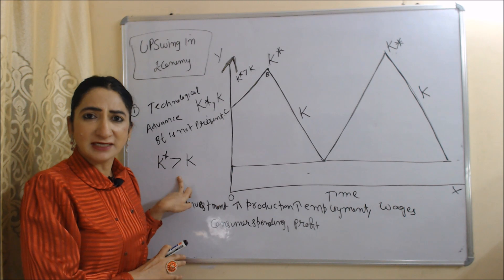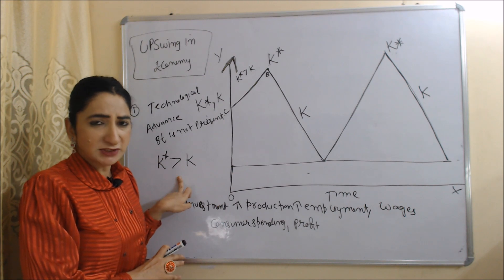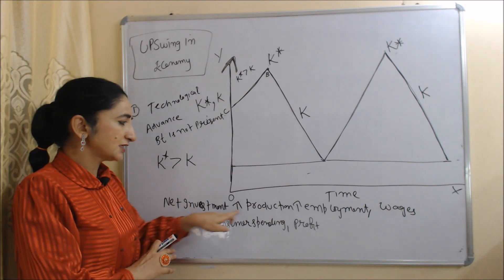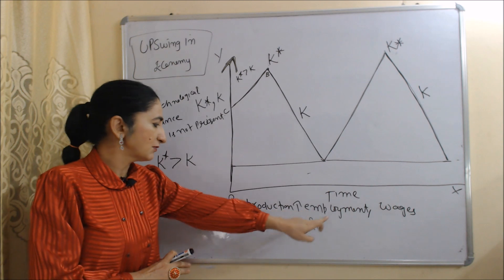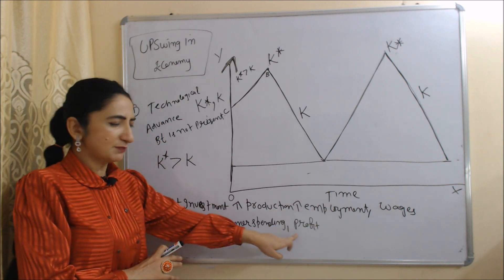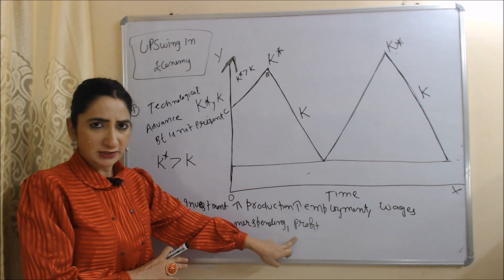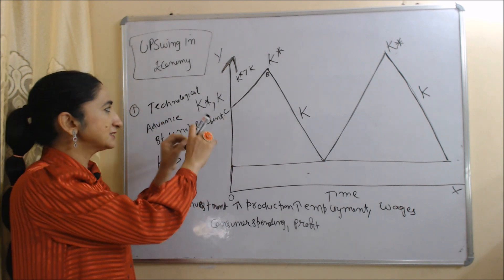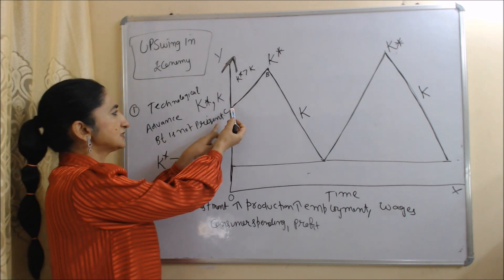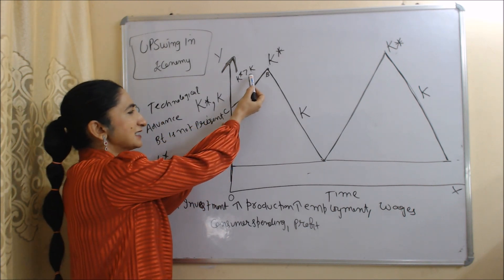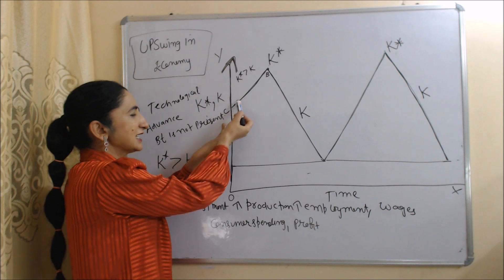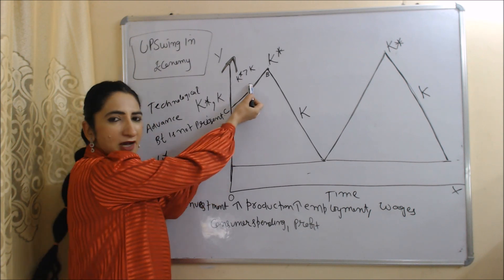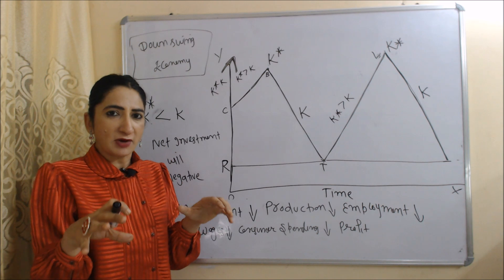When K* is more than K, our net investment will be positive and will increase. As investment increases, production, employment, wages, consumer spending, and profit will also increase, and our economy will go up. In this diagram, you can see from point C to point B, K* is more than K — that's why our economy is growing.